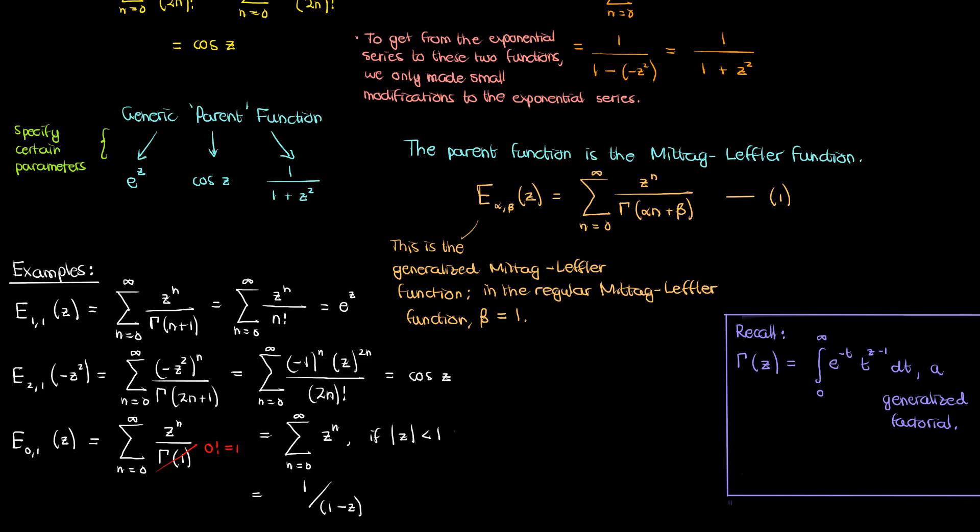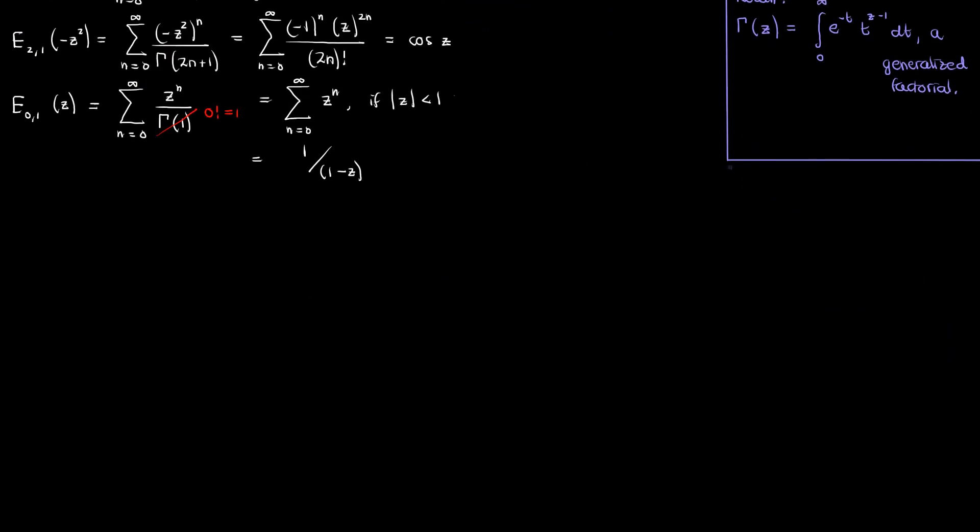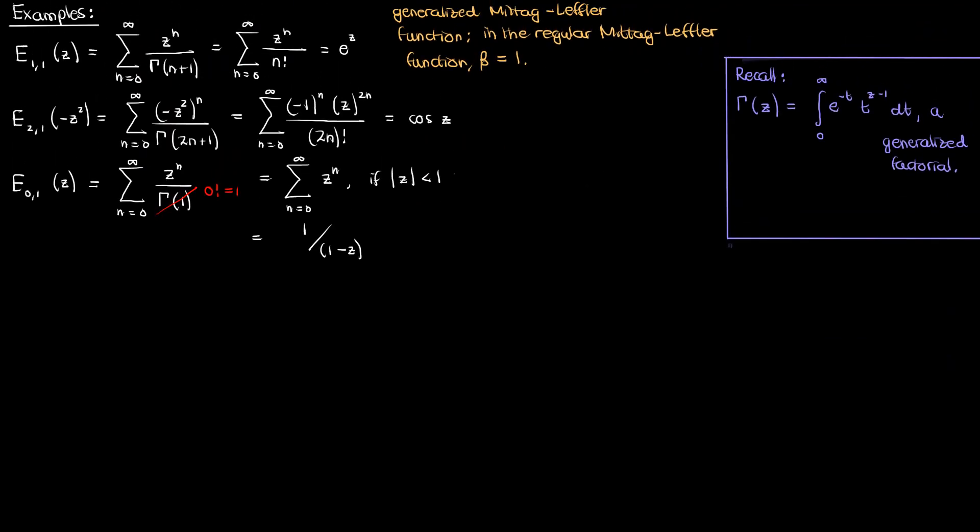So this is how we can go from the original Mittag-Leffler function, our parent function, to an exponential, a cosine, and the 1 over 1 minus z.